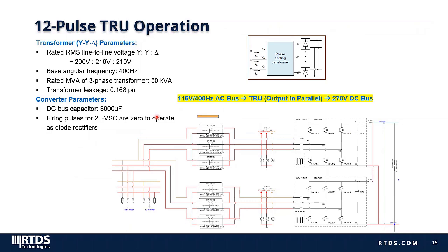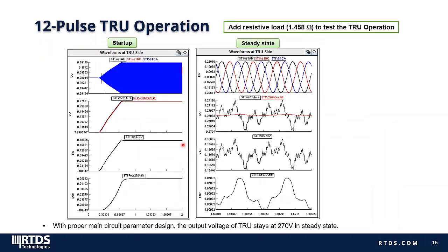Moving on to the implementation of the 12-pulse TRU: the transformers are in Y-Y-delta connection, with two rectifiers connected to the Y-connection and delta-connection windings. The rectified voltage has 12 pulses within one fundamental period. We use UCM converters with all firing pulses set to zero as the diode rectifiers. Note that the leakage of the transformer should be properly designed since the output DC voltage is tightly related to the leakage inductance. The simulation results show the TRU operating with a resistive load at 50 kW power, with the output DC voltage around 270 V.